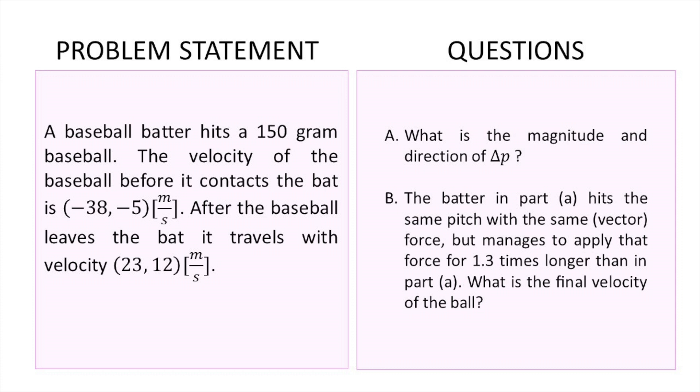Basically we are asked two questions: what is the magnitude and direction of delta p? And then a secondary question which says the batter in part A hits the same pitch with the same vector force but manages to apply that force for 1.3 times longer than in part A. What is the final velocity of the ball?